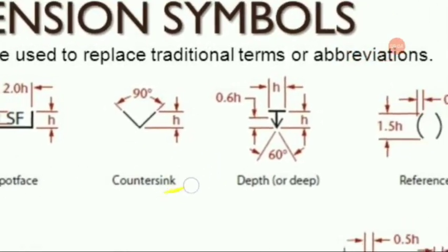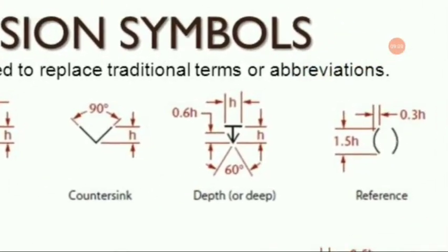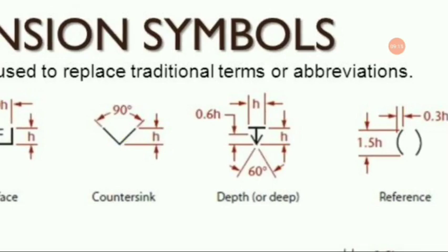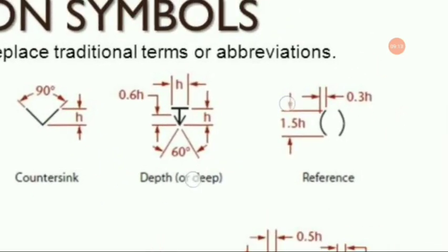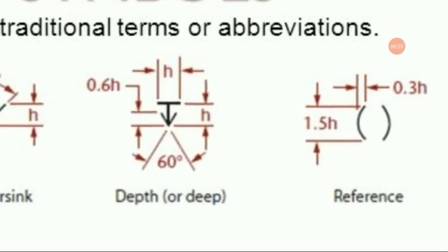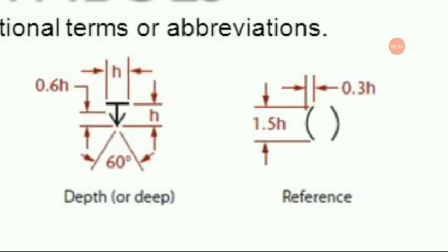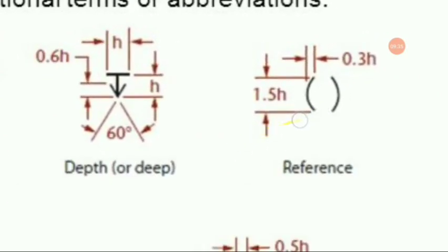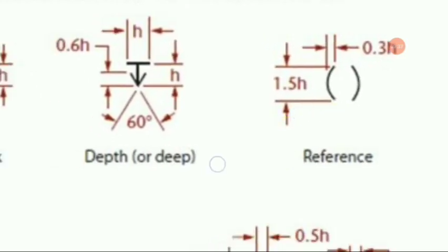For the counter sink, H is shown and the dimensioning system is given with an angular dimension of 90 degrees. Next is depth or deep, where H is the depth, 0.6H is the height of the arrow, and 60 degrees is the angle. For reference, the reference dimensioning system is also shown.